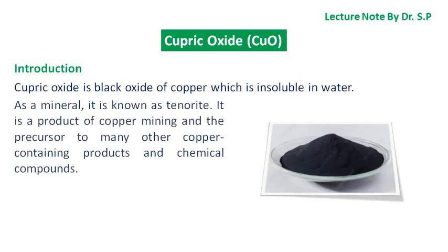In this tutorial we will discuss cupric oxide. Cupric oxide is a black oxide of copper which is insoluble in water. As a mineral, it is known as tenorite. It is a product of copper mining and the precursor to many other copper-containing products and chemical compounds.